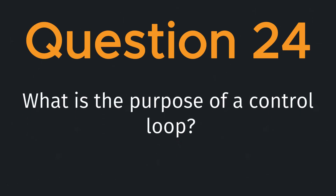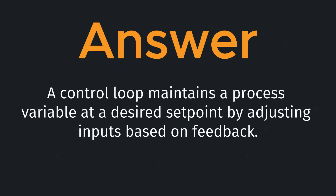Question twenty-four: what is the purpose of a control loop? A control loop maintains a process variable at a desired set point by adjusting inputs based on feedback.